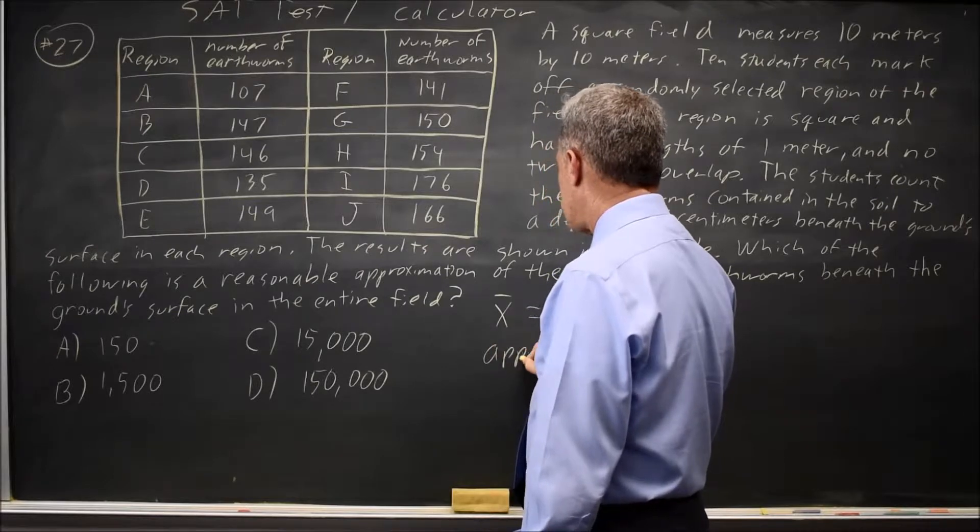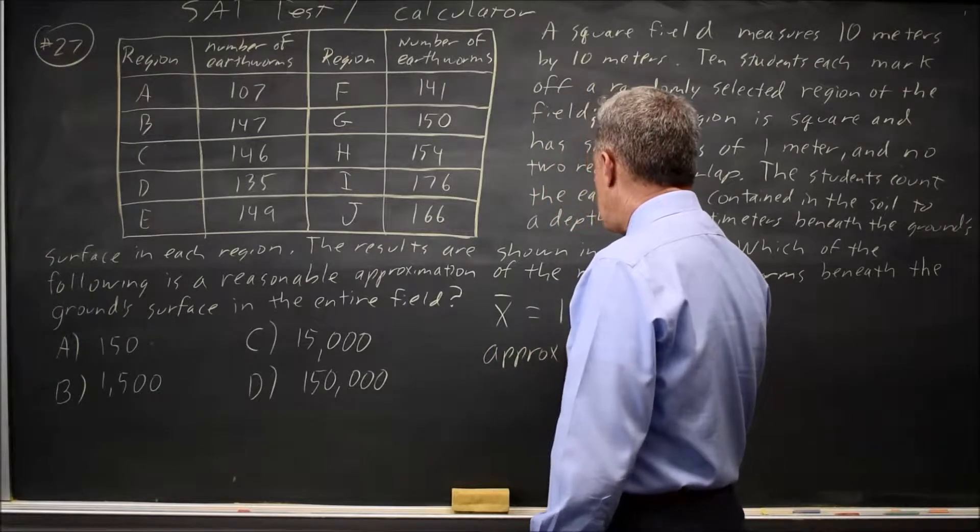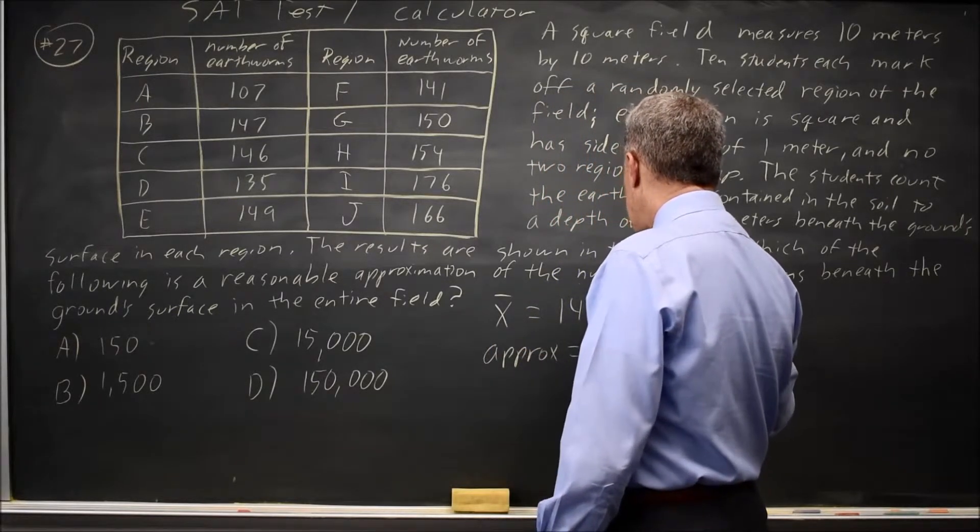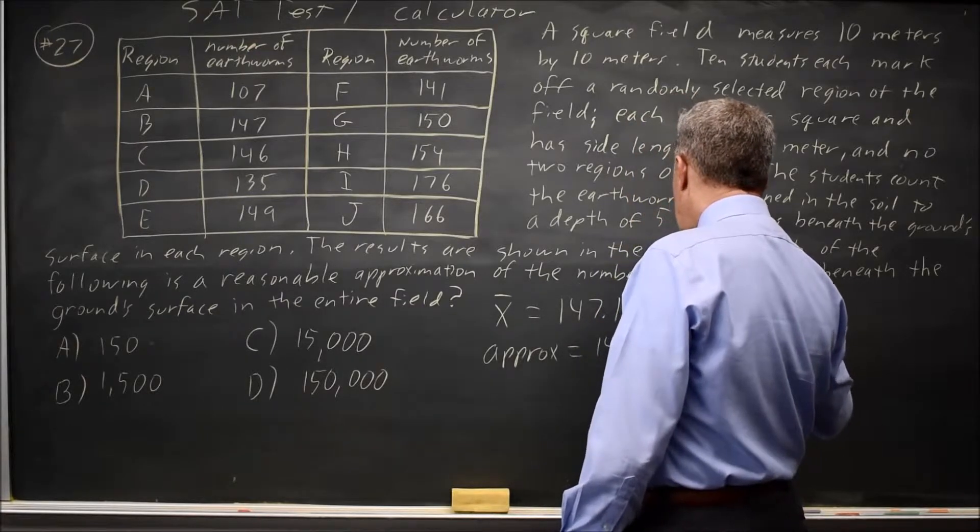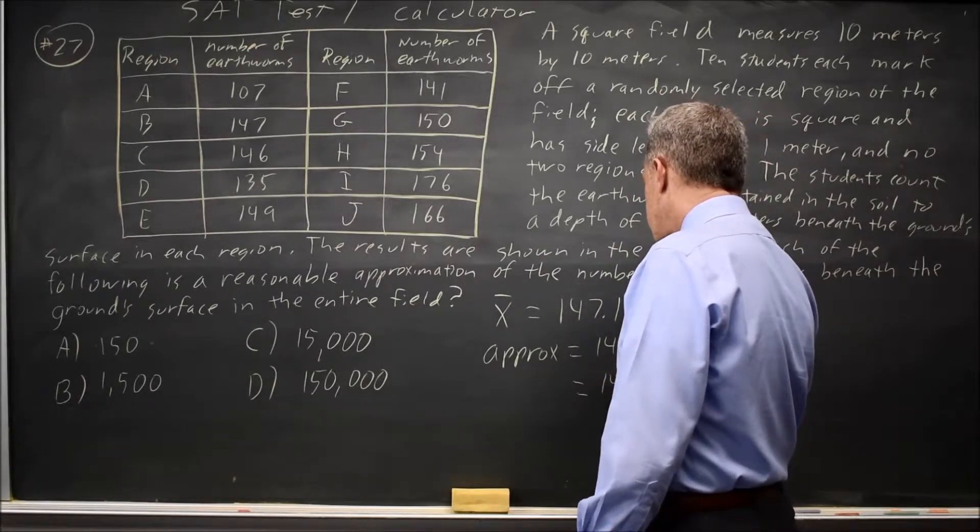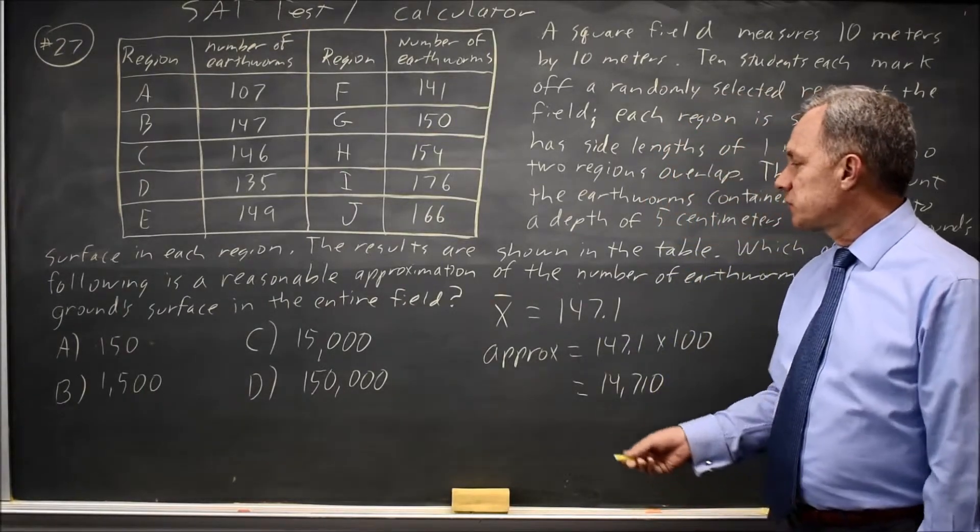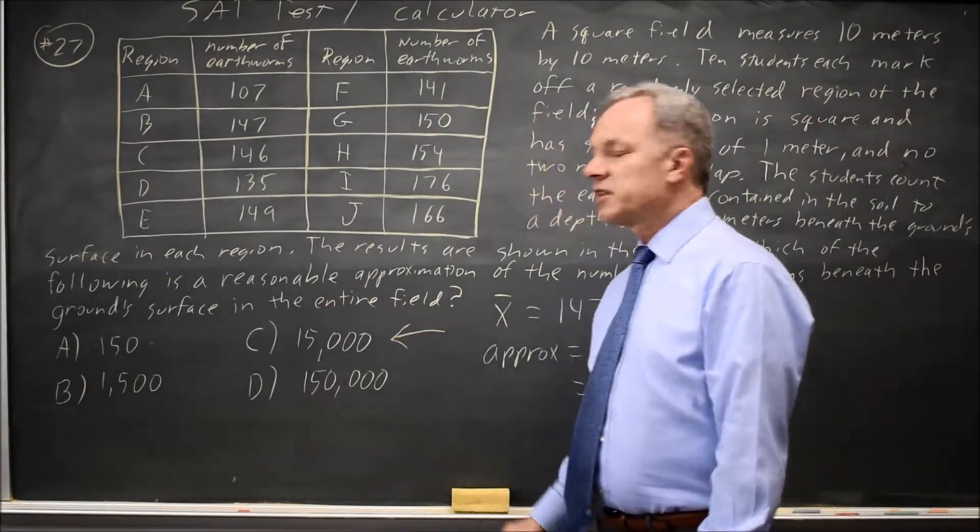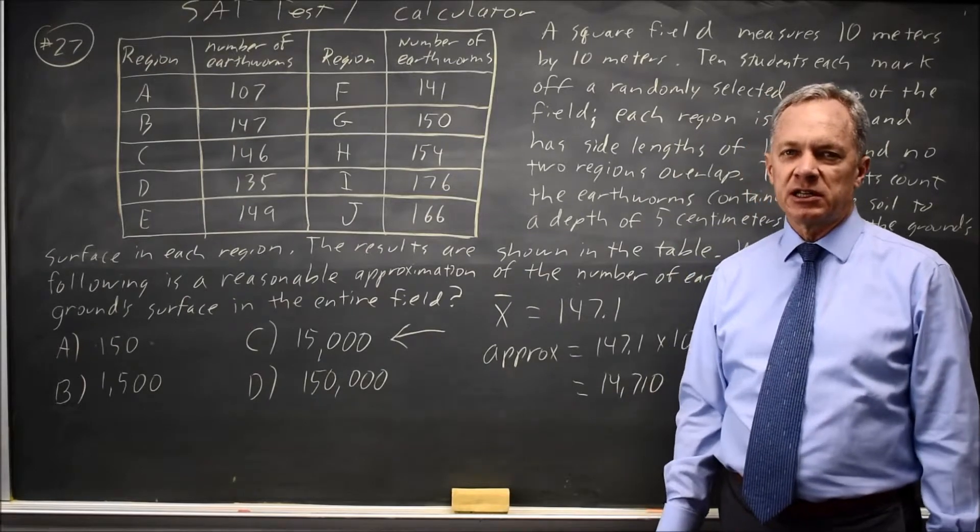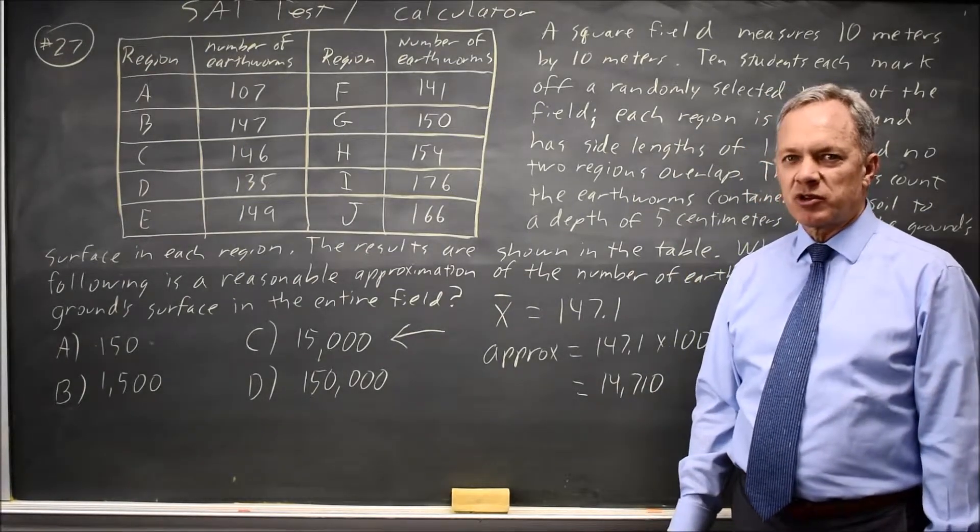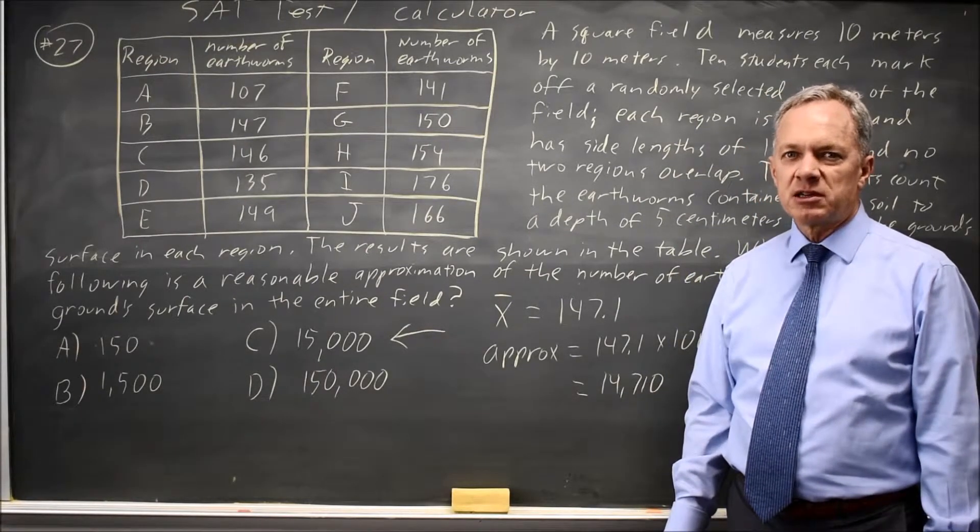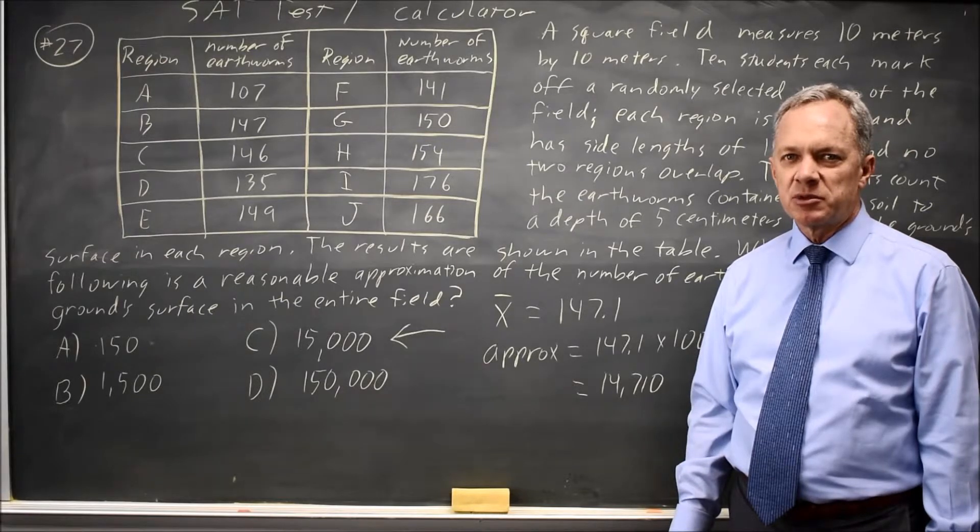our approximation is 147 times 100, which is 14,710, which is about 15,000. 15,000 is a reasonable approximation to the total number of earthworms you would estimate for this field given the sample that we observed.